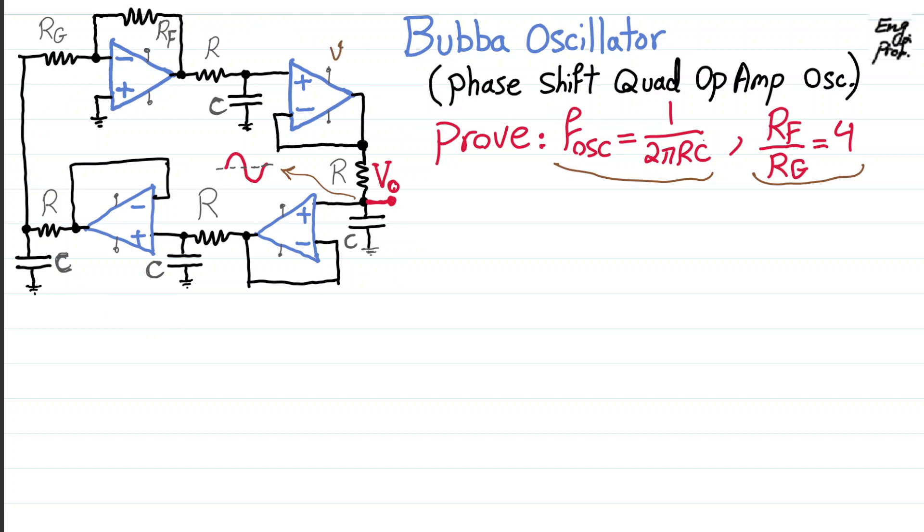Let's make the assumption that we are applying V_CC, the positive supply voltage, and negative V_CC properly to all four op-amps. So it's a double supply design for the sake of this conversation. And then, with that in mind, we are making the assumption that no op-amp is saturated, so all op-amps are linearly operating.